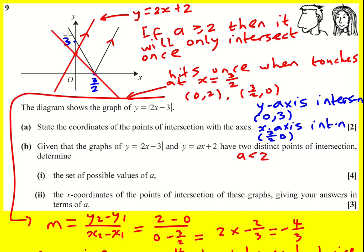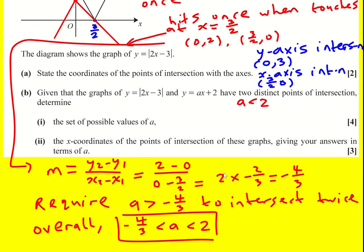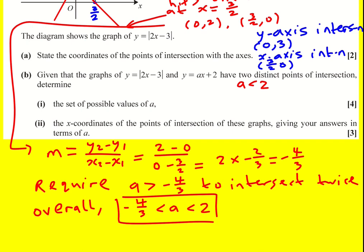Then I looked at keeping reducing the gradient—we still get 2. But there's this point here where it just touches in one place, and when we go even steeper than that it's only going to touch in one place. So I found the gradient between (0, 2) and (3/2, 0), which was what part (a) helped us find. At that particular point the gradient was minus 4 over 3, so the gradient has to be bigger than that to get these two points of intersection. Bring those two pieces of information together and we've got our result for part b(i).